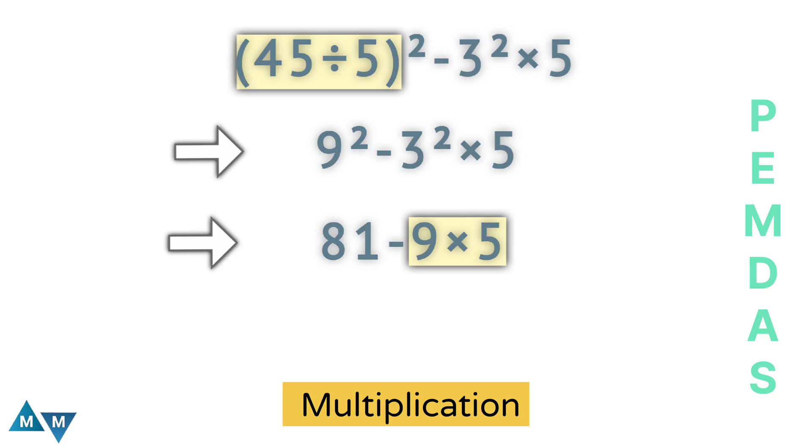Now, finally, we are left with 81 minus 45, which will give 36. This is our final answer.